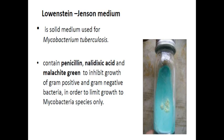Another example of selective medium is Loewenstein-Jensen medium, which is a solid medium used only for Mycobacterium tuberculosis. Only Mycobacterium tuberculosis can grow in this medium because it contains penicillin, malachite acid, and malachite green, which inhibit the growth of gram-positive and gram-negative bacteria in order to allow the growth of Mycobacterium tuberculosis.